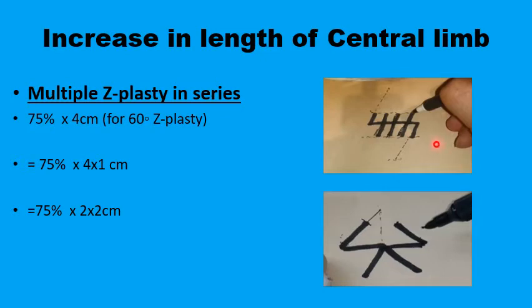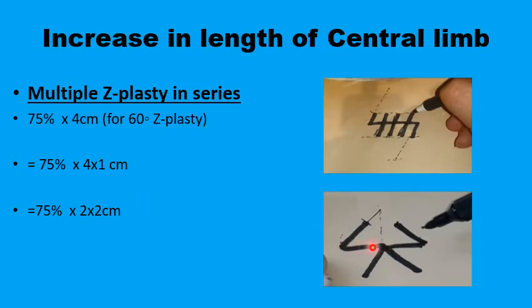Why do multiple Z-plasties in series provide the same lengthening effect in the central axis as conventional Z-plasties, while at the same time preserving tissue displacement from the transverse axis? It's because when you are doing four of these, you still get a 75 percent lengthening effect for each unit collectively. The four centimeters could extend up to another three centimeters in theory. The same applies with the double opposing: if you have a four centimeter central limb divided into two two-centimeter Z-plasties, you still get the 75 percent increase — a three centimeter gain — while only using one or two centimeters of transverse tissue.